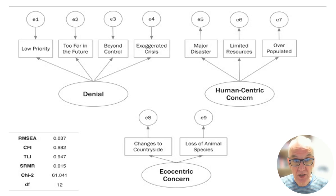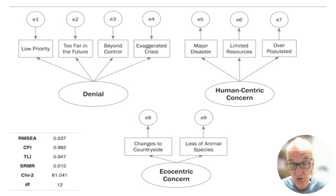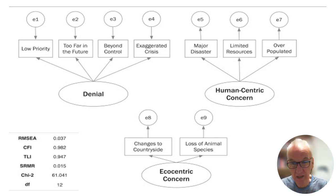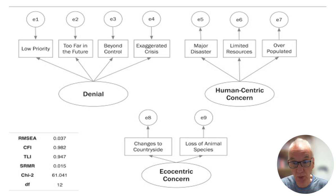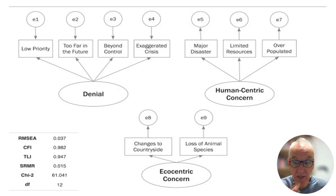Three factors do emerge, though they do not directly map onto VBN. The first is ecocentric concern, which does directly map. Then there's human-centric concern, which broadly might be regarded as altruistic — but it's not an exact mapping. And then we have a factor called denial, which captures the idea of responses that deny climate change is happening. This doesn't come through as a separate factor inside VBN-type theory.